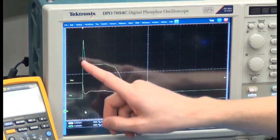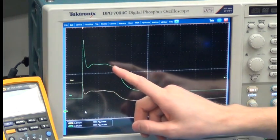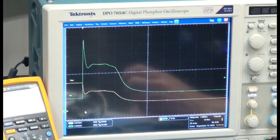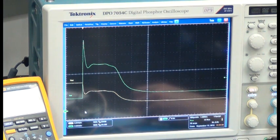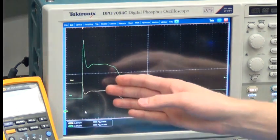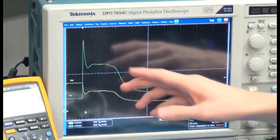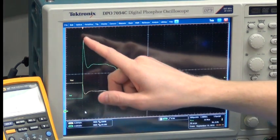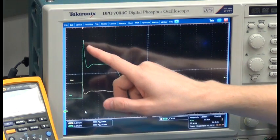This large initial spike in the output current is due to the output capacitive filter of the converter dumping its energy into the load. So right when the load shorts, the output capacitors of the filter dump their energy, causing the large current spike.